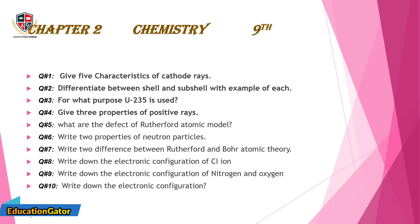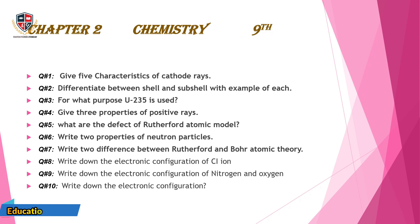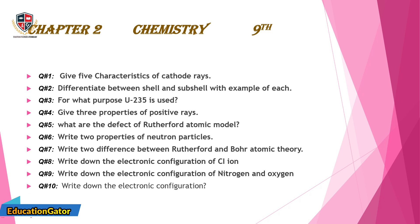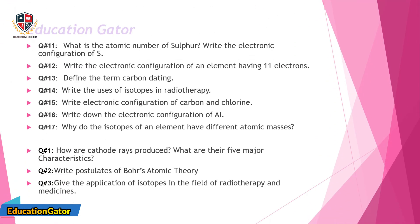Question 5: What are the defects of Rutherford's atomic model? Question 6: Write two properties of neutron particles. Question 7: Write two differences between Rutherford and Bohr atomic theory. Question 8: Write down the electronic configuration of C-ion. Question 9: Write down the electronic configuration of nitrogen and oxygen. Question 10: Write down the electronic configuration. Question 11: What is the atomic number of sulfur? Write the electronic configuration of S. Question 12: Write the electronic configuration of an element having 11 electrons.